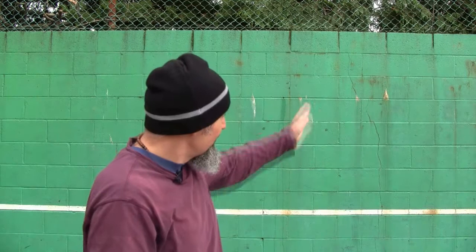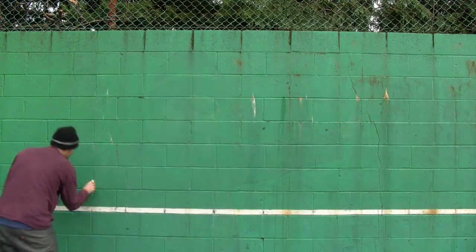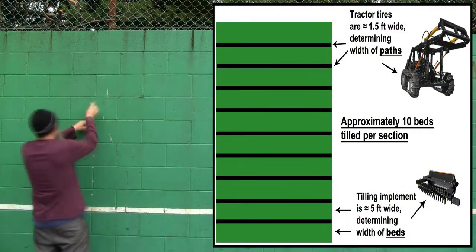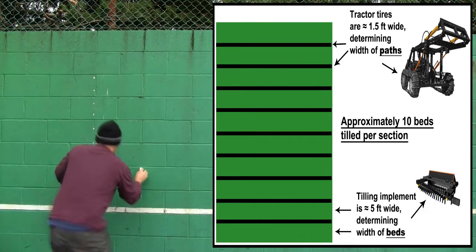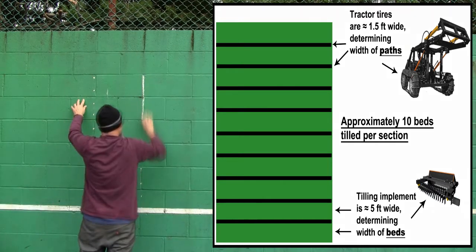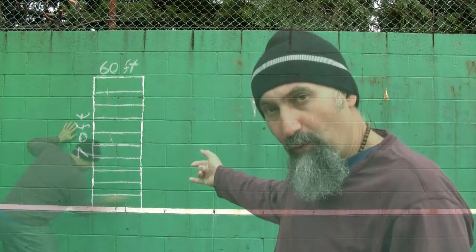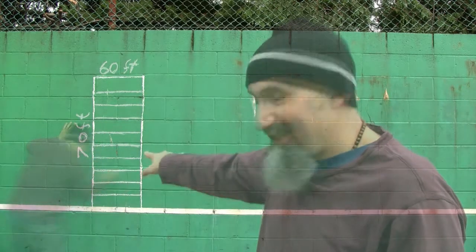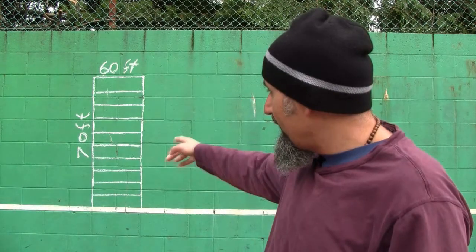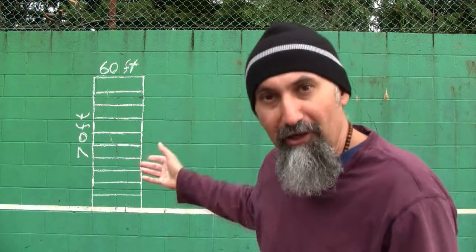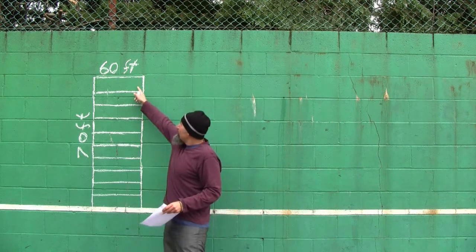We've set up our sample section. We have 10 different beds; each bed is about 5 feet wide and 60 feet long. The whole dimensions of that section are 70 feet by 60 feet — again, not to scale.